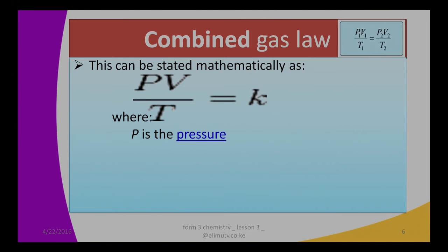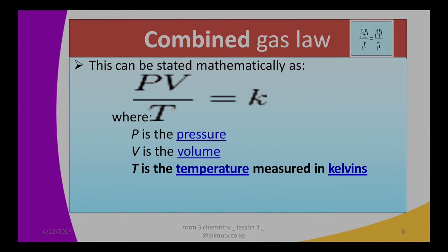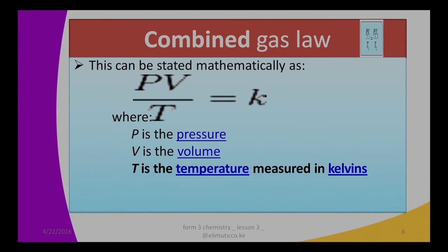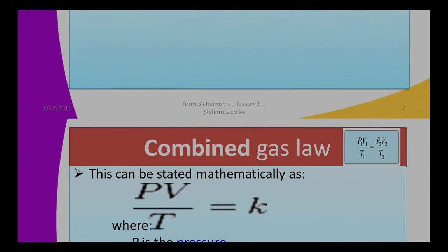Where P is the pressure, V is the volume, and T is the temperature measured in Kelvin. Our thermometers measure temperatures in degrees Celsius, but all temperatures we use must be expressed in Kelvin scale. K is a constant, and this constant has units of energy divided by temperature, meaning the product we get here is in the form of energy.